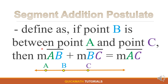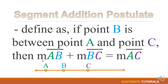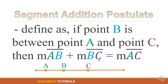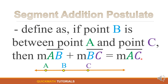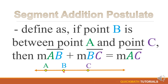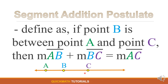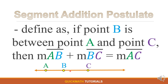The segment addition postulate is defined as: if point B is between point A and point C, then the measure of line segment AB plus the measure of line segment BC is equal to the measure of line segment AC. It means that if point B is between point A and point C, we can have the measure of line segment AB plus the measure of line segment BC equal to the measure of line segment AC.